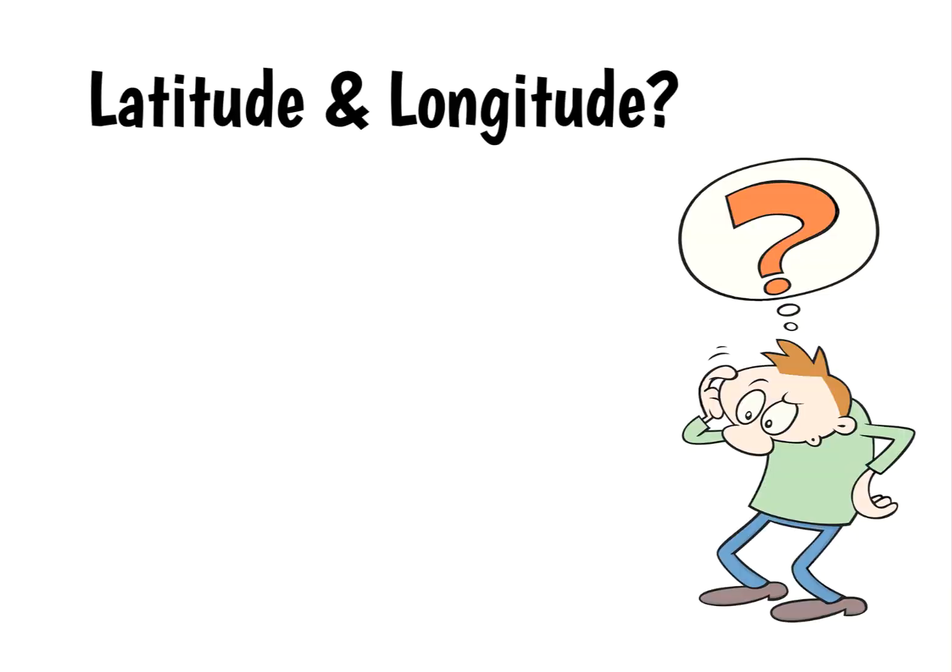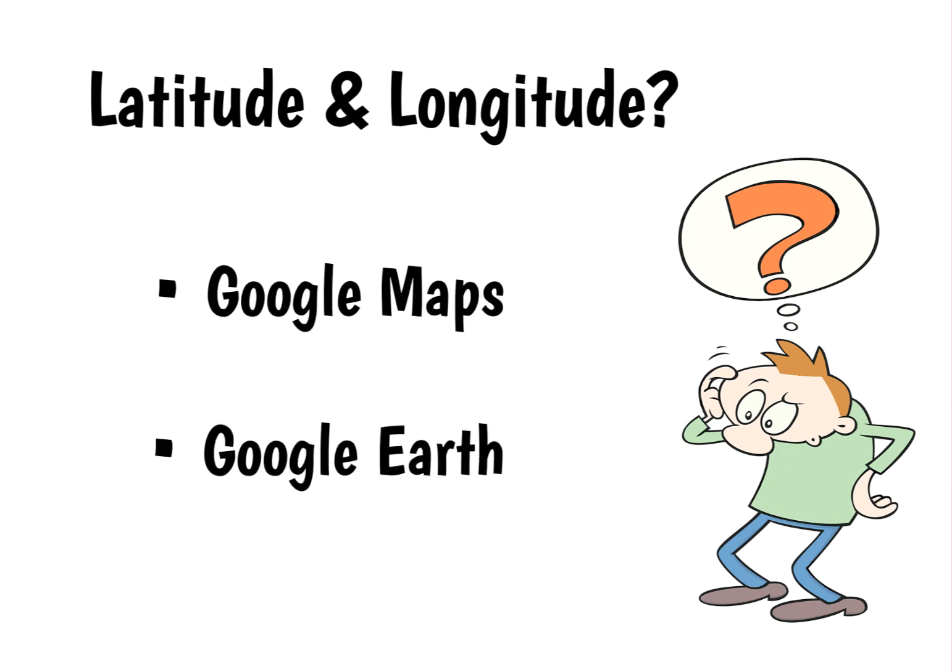To create an orthographic projection, you probably want the view to be centered over some point on the Earth. This means a specific latitude and longitude. There's a really easy way to get those numbers: Google Maps or Google Earth. Here's the Google Earth method.